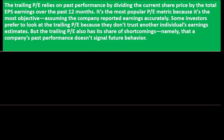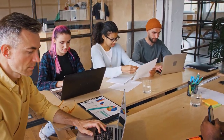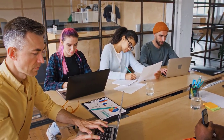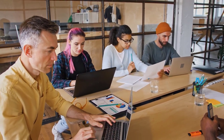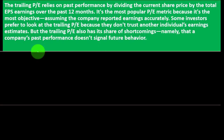The trailing P/E relies on past performance by dividing the current share price by the total earnings per share over the past 12 months. It's the most popular P/E metric because it's the most objective, assuming the company reports earnings accurately. Past EPS is based on actual data — what actually happened — so we can have more confidence in those numbers, assuming the financial statements are reliable.